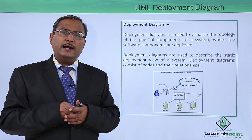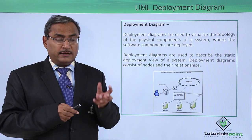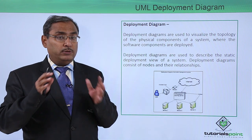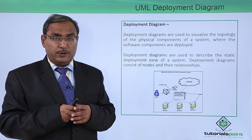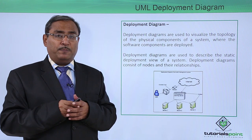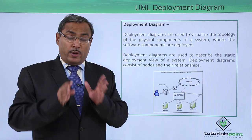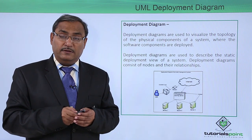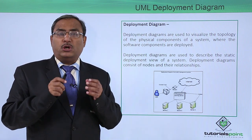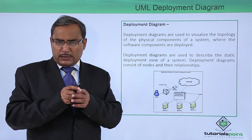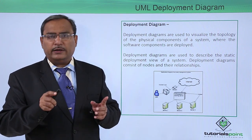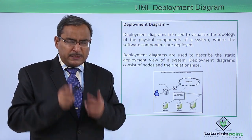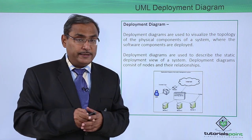In our component diagram, we looked at what the different components and artifacts are that will be required for software development, how they get organized, and what the relationships between them are. But in the case of the deployment diagram, we are not concerned with the components themselves. We are concerned with how these components will get deployed on different physical devices, what the topology of those physical devices will be, and what the hardware and networking architecture is on which the software will be running. For that purpose, the deployment diagram was created.